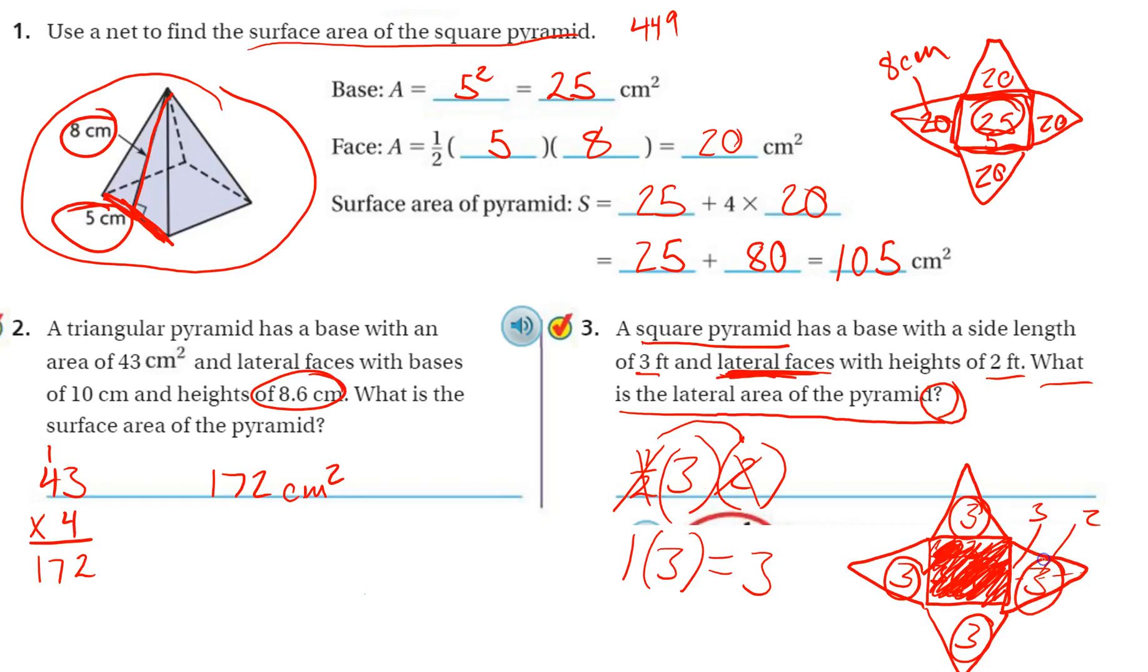And I can either count them, 3 plus 3 plus 3 plus 3, but since I have 4 of them, I can also multiply by 4, and that gives me 12. So the area of the lateral, the lateral area, so just the walls, is 12 feet squared.